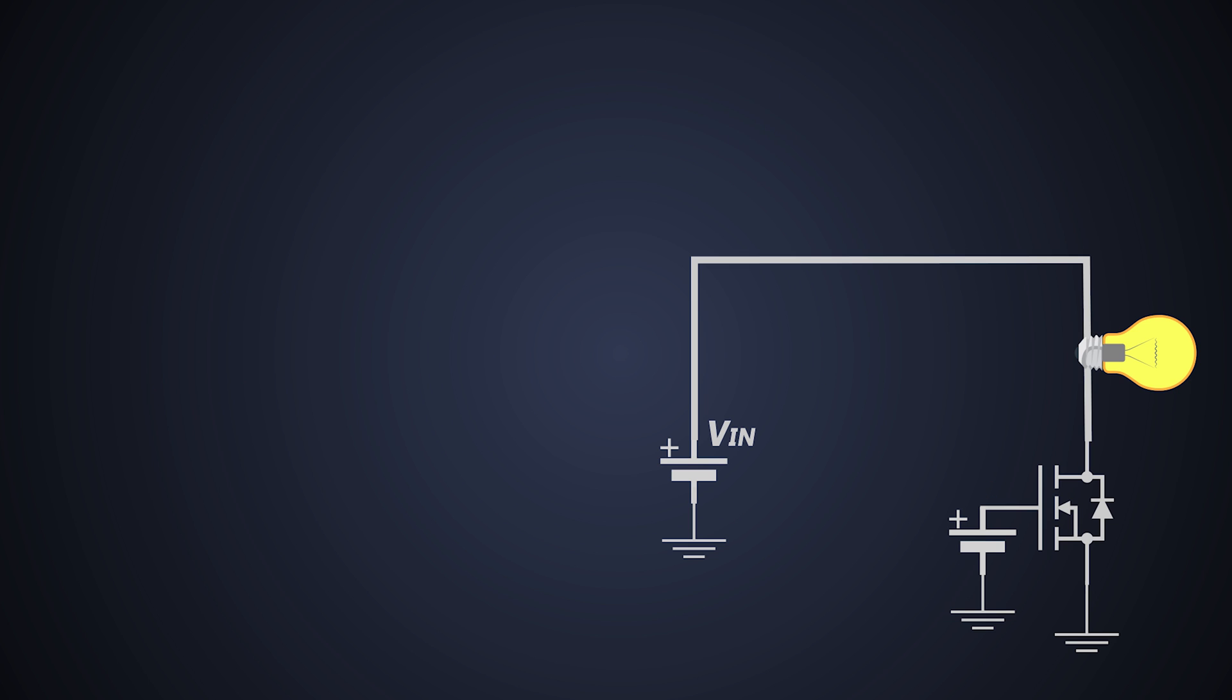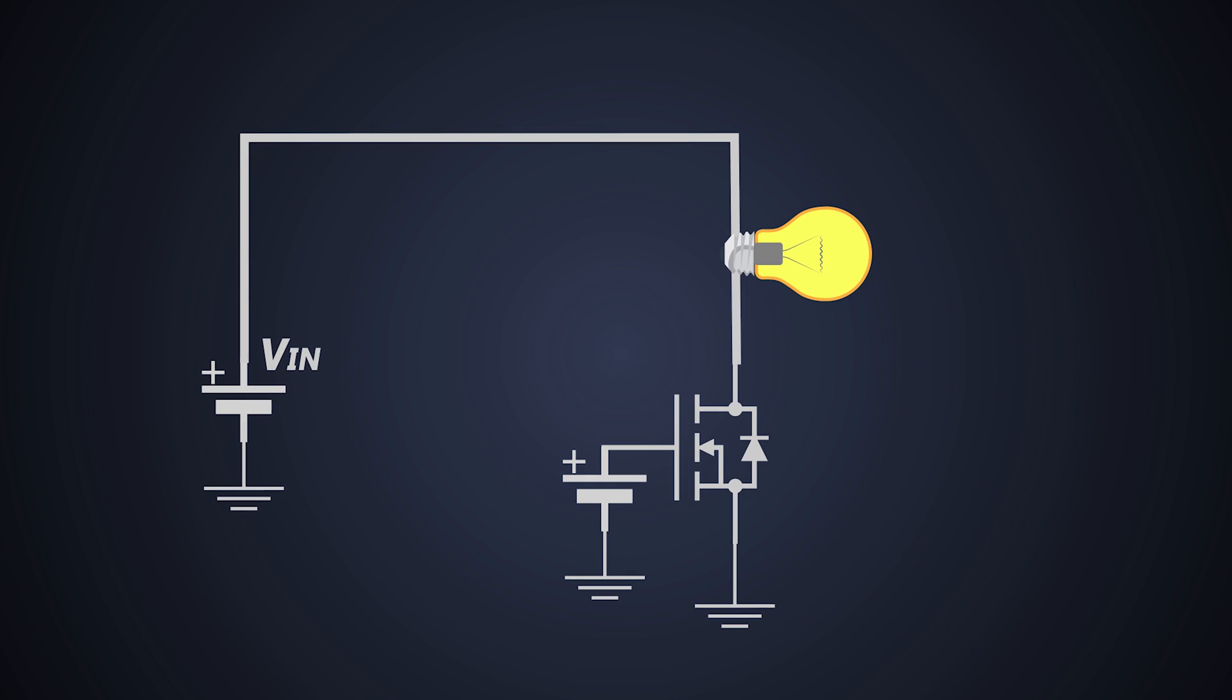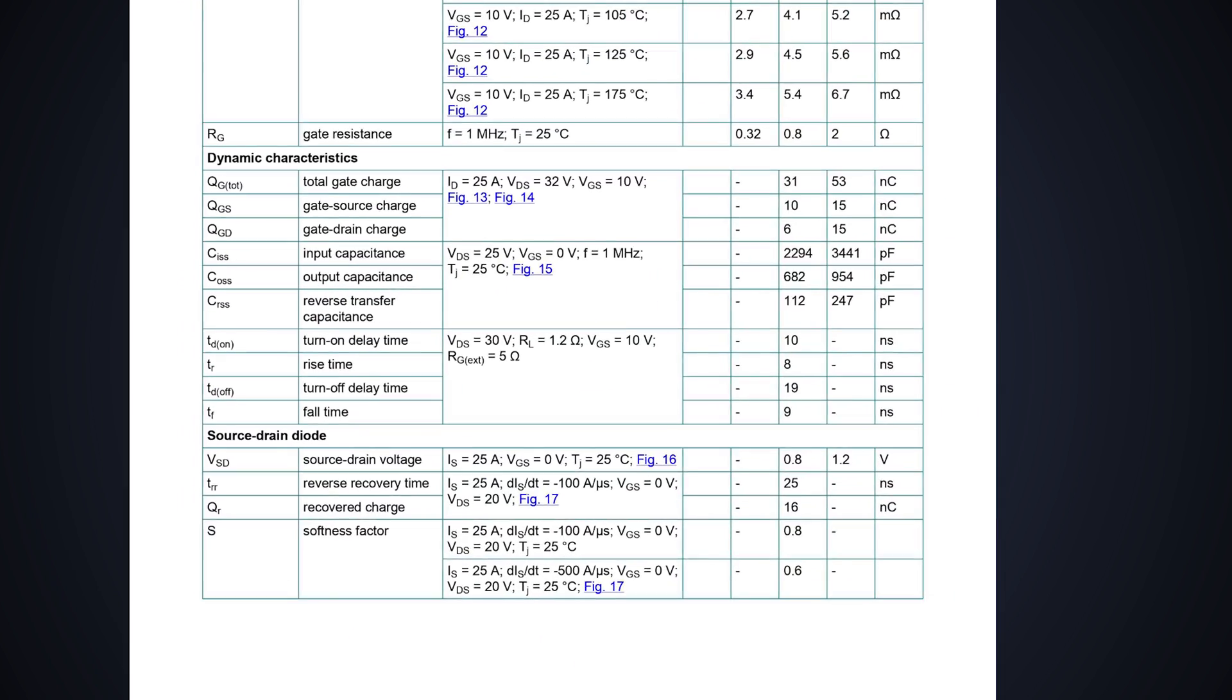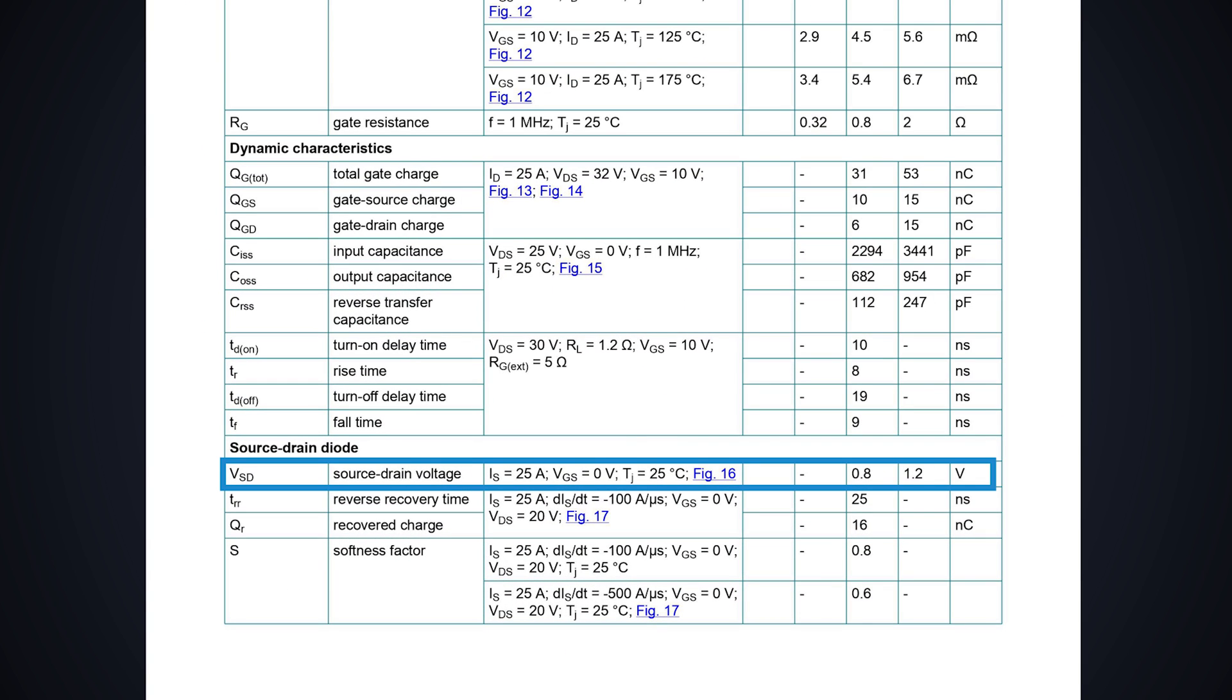When we are using a MOSFET in the third quadrant operation, or let's say there is an inductive load, then this body diode of the MOSFET comes really handy. Its forward voltage drop is actually the source to drain voltage of the MOSFET.